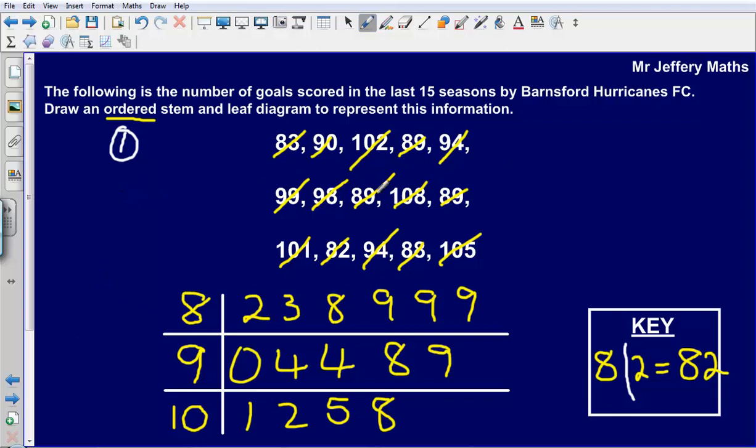The second mark you get is for making sure that all numbers are present. So that is kind of why I was ticking them off as I went, just to make sure that I did not forget any numbers. So the second mark comes for all numbers present.